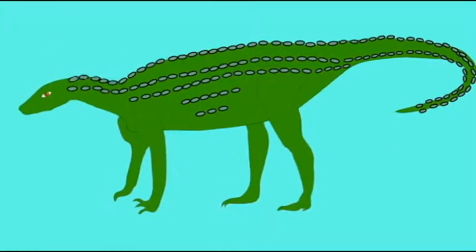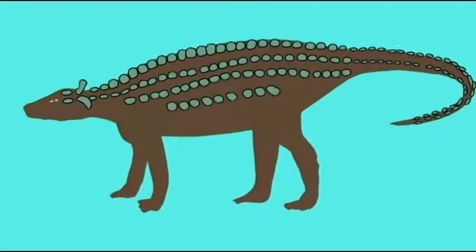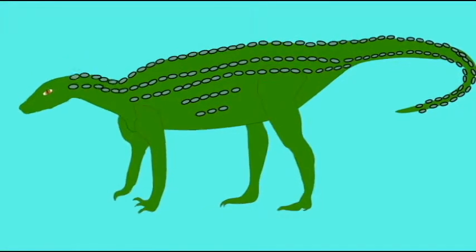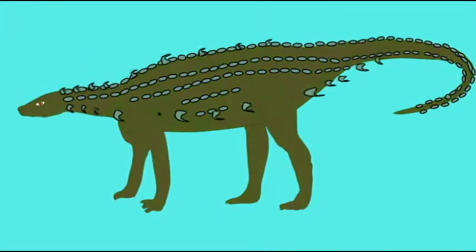All of the ornithischian dinosaur groups are primarily herbivorous. The armored dinosaurs were primarily quadrupedal. Only the very first members of the group would be exceptions to this.